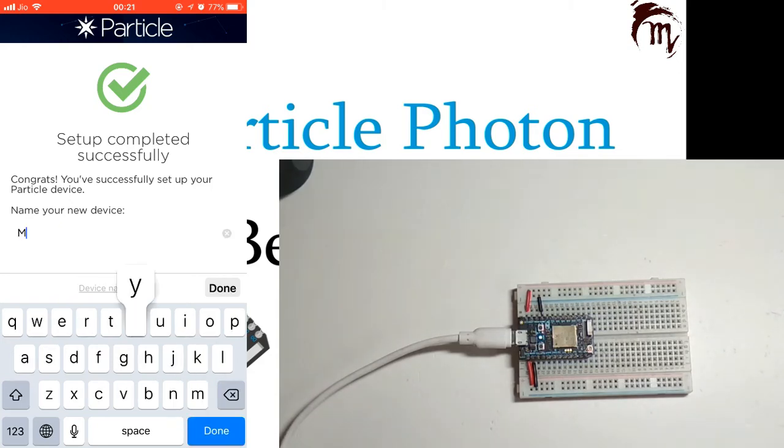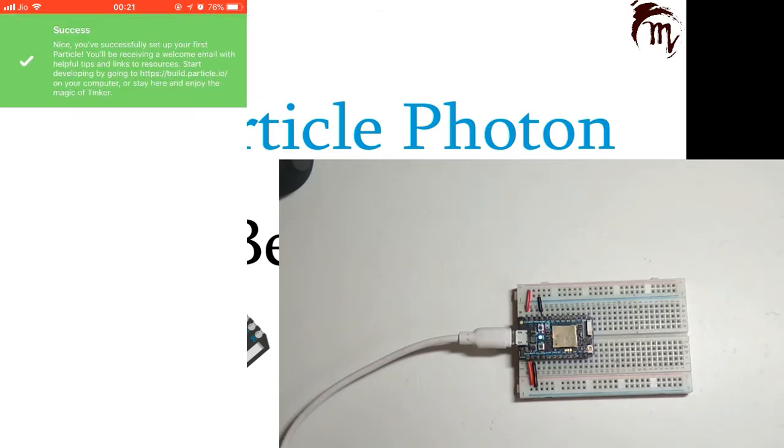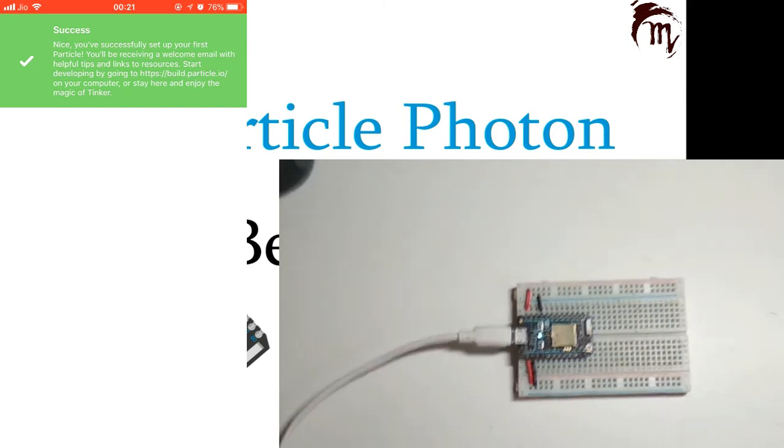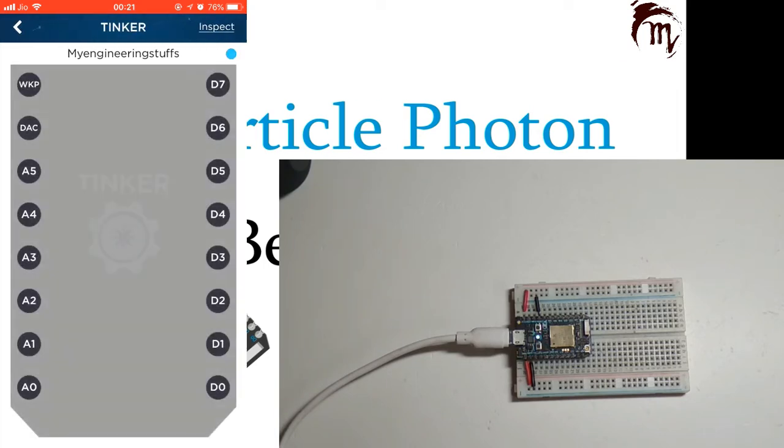After completing, it will ask you to give a device name. I will name my device Myengineeringsteps. Click Done. Whenever you claim your device or set it up for the first time, it will get uploaded with a firmware called Tinker, which provides a layout for your Particle board.